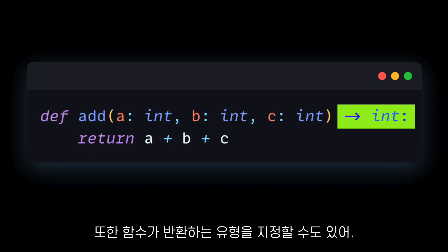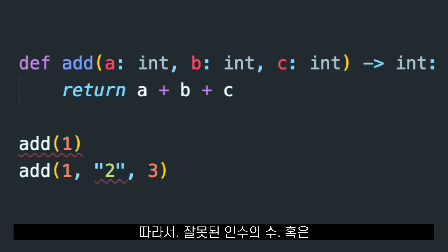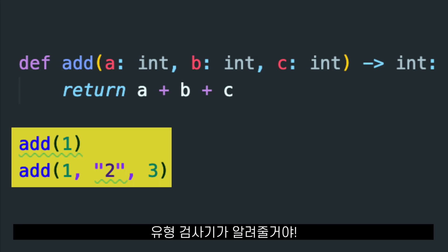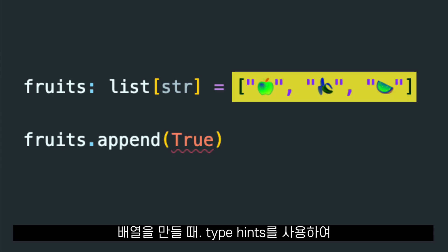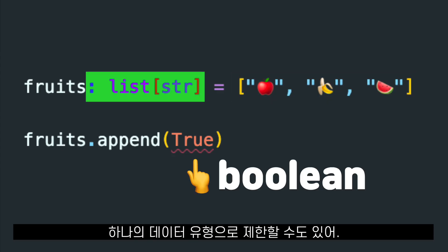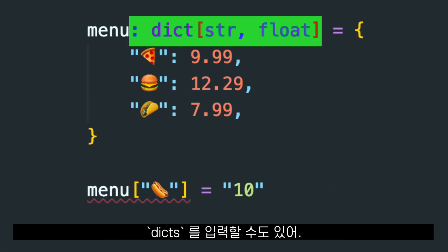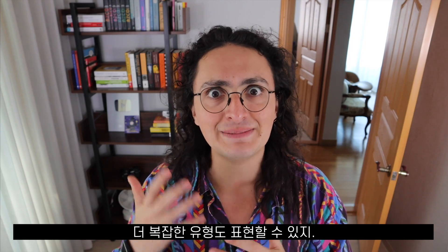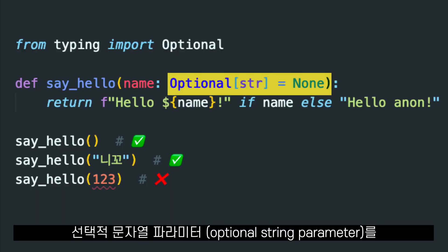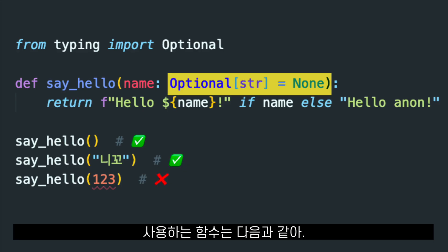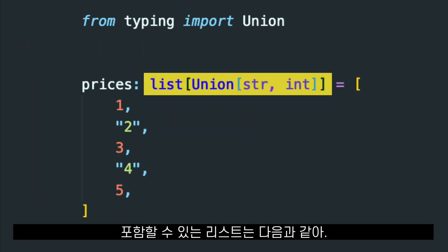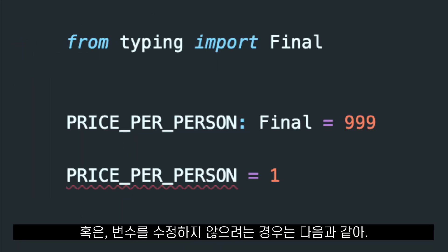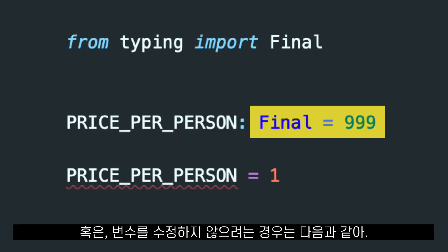We can even specify what type the function returns. So if we make a mistake and send the wrong number of arguments or the wrong type, our type checker can let us know. When creating arrays, you can use type hints as well to restrict them to one data type. You can also type dictionaries. And using the typing module, you can express more complicated types as well, for example a function that takes an optional string parameter, or a list that can have both numbers and strings, or when you don't want a variable to ever be modified.